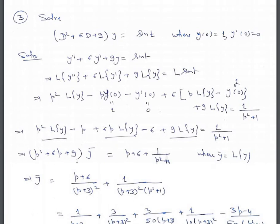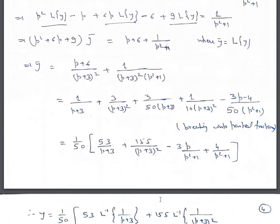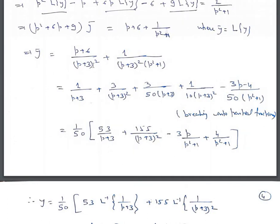Which can be written as (p² + 6p + 9)·ȳ = 1/(p² + 1). So ȳ = 1/[(p+3)²·(p² + 1)]. Now breaking into partial fractions, we have: 1/(p+3) + 3/(p+3)² from the first term; and from partial fractions of 1/[(p+3)²(p²+1)]: 3/[50(p+3)] + 1/[10(p+3)²] - (3p+4)/[50(p²+1)].